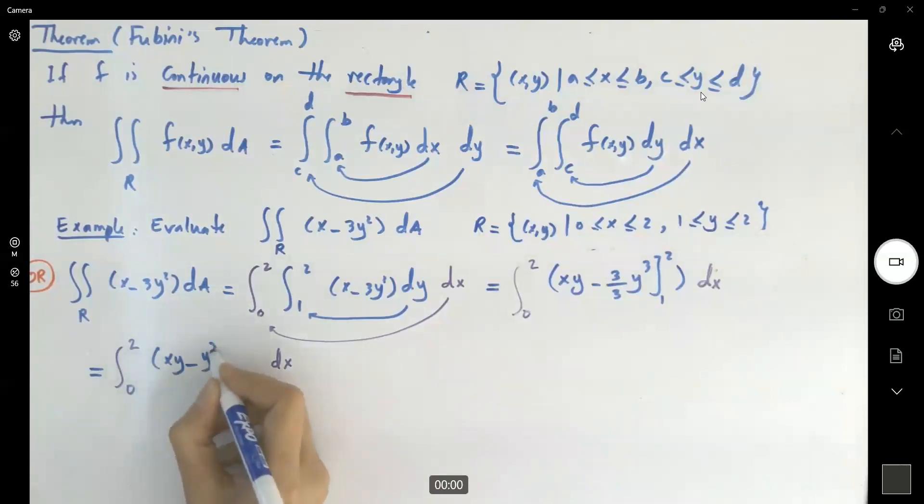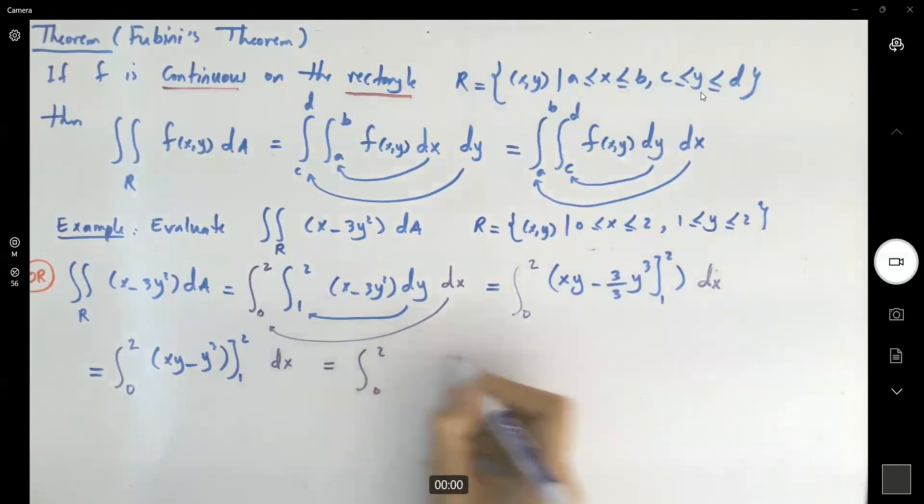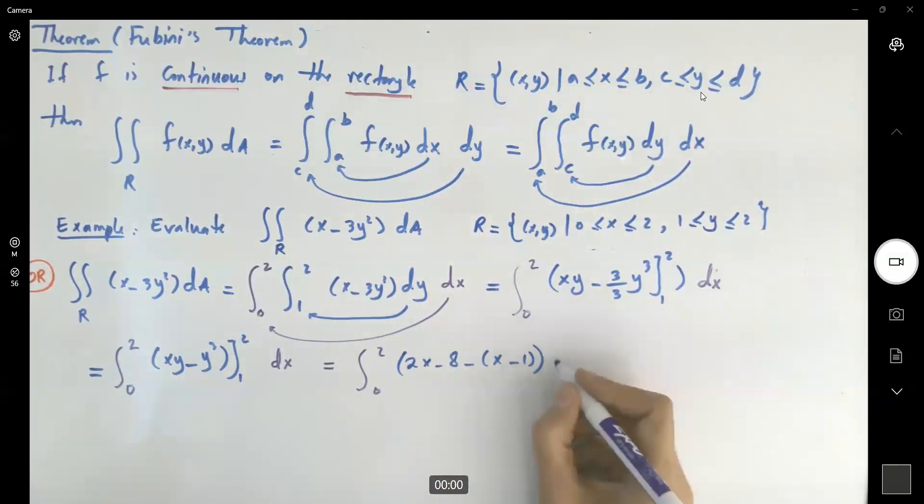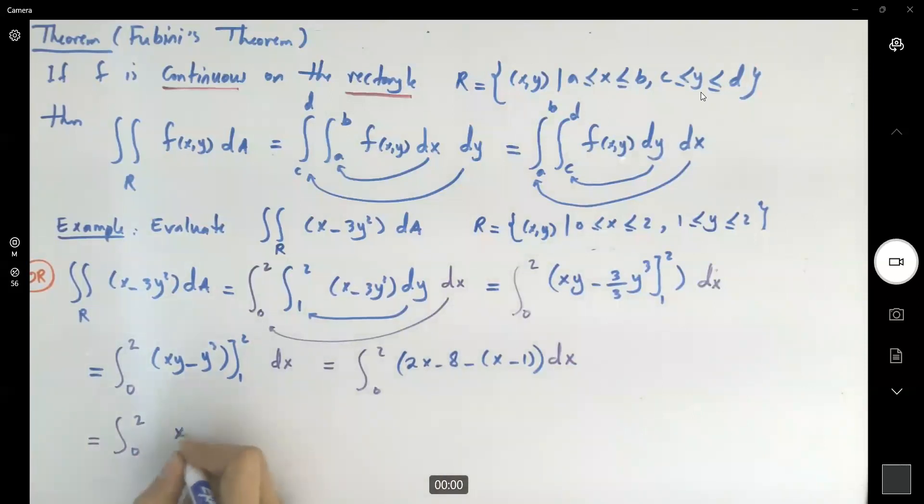xy minus y³. And just simplify this, 1 to 2. Let us plug in 2. Then plug in 1. Simplify this guy. Let me just calculate this. We have 2x - 8 minus x - 1. And then we take the integral with respect to x, 0 to 2. 2x minus x, negative 8 plus 1 minus 7. dx.